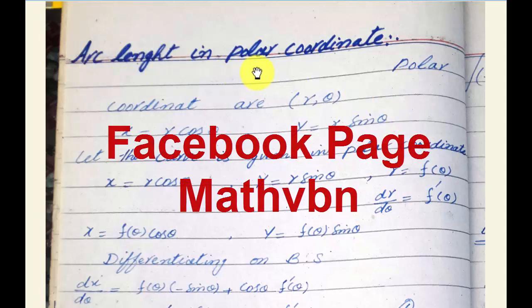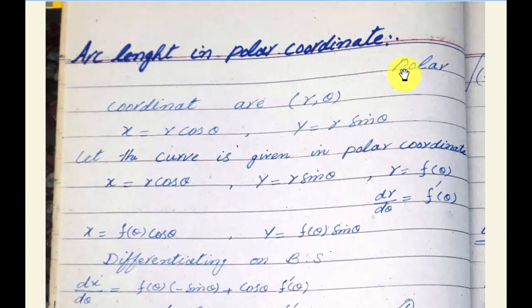We start with arc length in polar coordinates. Last lecture, I covered arc length in Cartesian form and in parametric form. Now we will cover arc length in polar coordinates.